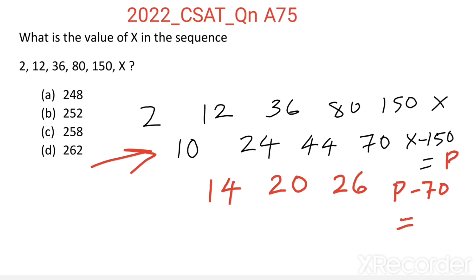Here we can see we got another series which is increasing by 6. 14 plus 6 equals 20, 20 plus 6 equals 26, then 26 plus 6 equals 32. From here we got P equals 102.